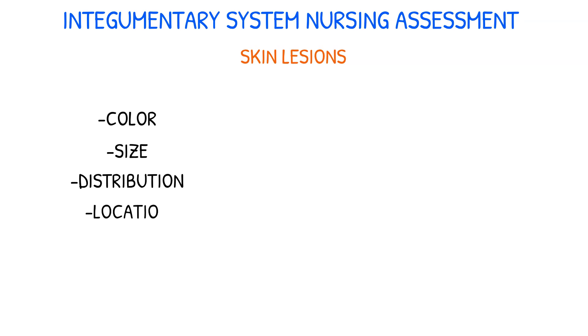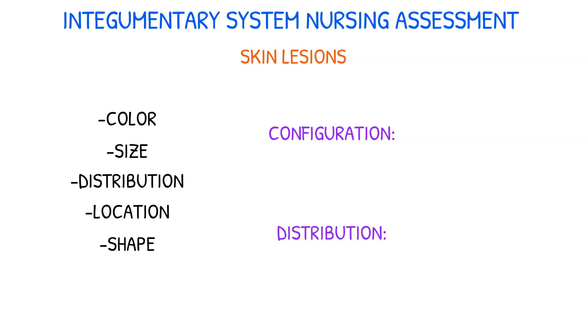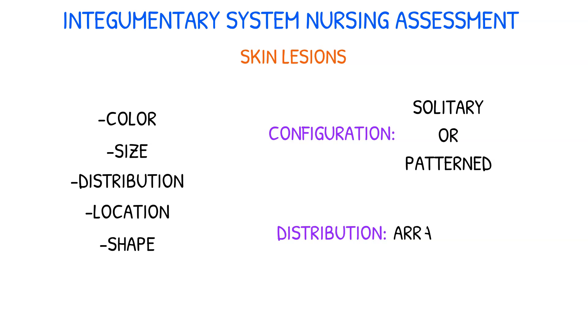Skin lesions should also be noted, including their color, size, distribution, location, and shape. They are usually described in terms related to their configuration and distribution. Configuration refers to whether they are solitary or patterned in relation to other lesions, while distribution refers to the arrangement of lesions over an area of skin.